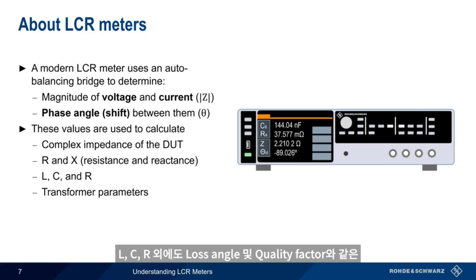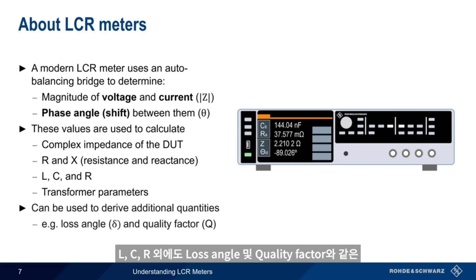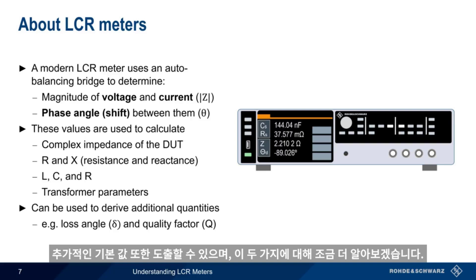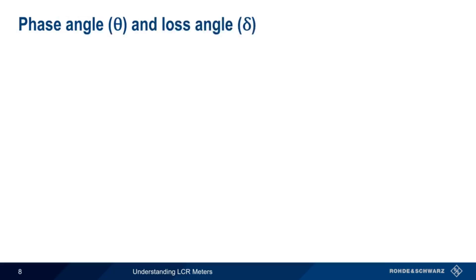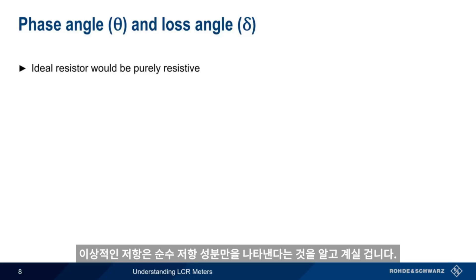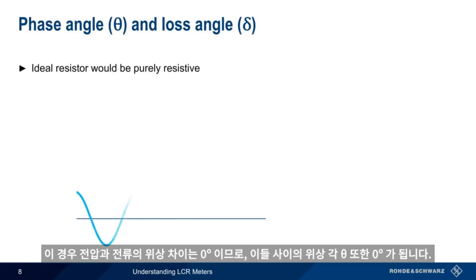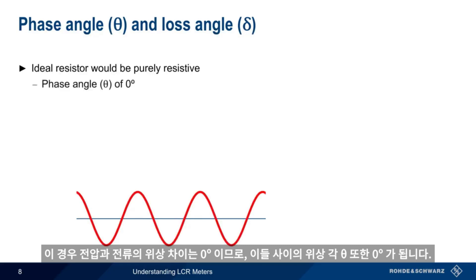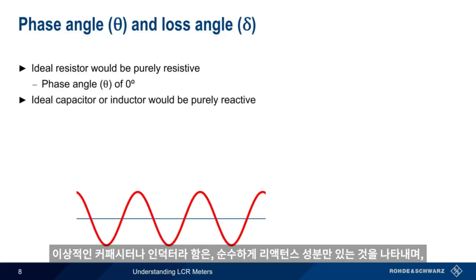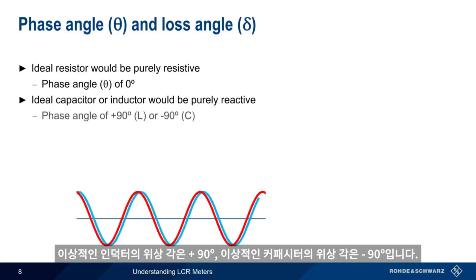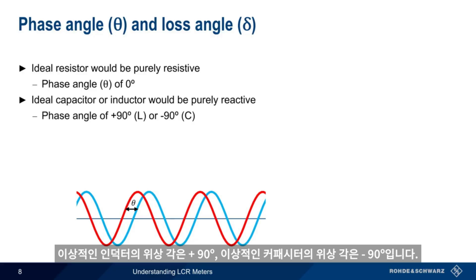In addition to L, C, and R, additional quantities such as the loss angle and quality factor can also be derived from these fundamental values. An ideal resistor would be purely resistive, with voltage and current in phase — so the phase angle theta between them would be zero degrees. An ideal capacitor or inductor would be purely reactive, with a phase angle of plus 90 degrees for an ideal inductor or minus 90 degrees for an ideal capacitor.